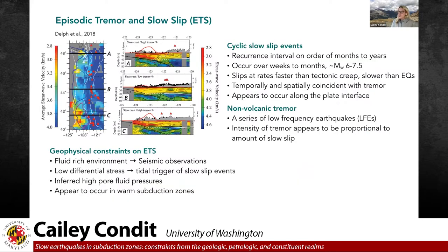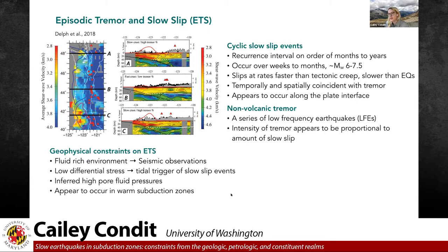From geophysical constraints, the zone where ETS occurs is really fluid-rich. Cross-sections through Cascadia show very slow shear wave velocities right along the plate interface, coinciding with the highest proportion of tremor. Those slow shear waves have been linked to a fluid-rich environment. Tidal triggering of slow slip events suggests this environment has very low differential stresses. Together, these observations have been used to infer a zone of high pore fluid pressure, at least transiently.